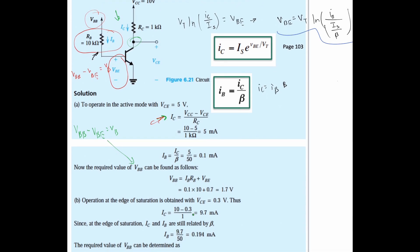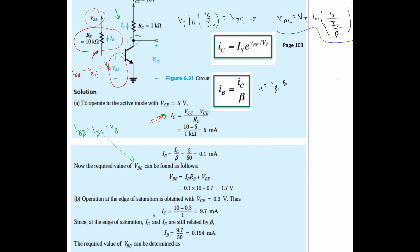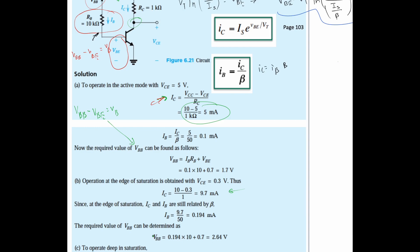We are just going to change our IC values. IC is going to be 10 minus 0.3 over 1. We take 0.3 because VCE is 0.3, and we get 9.7 milliamps. Then we do the same thing for IB, then the same equation for VBB.